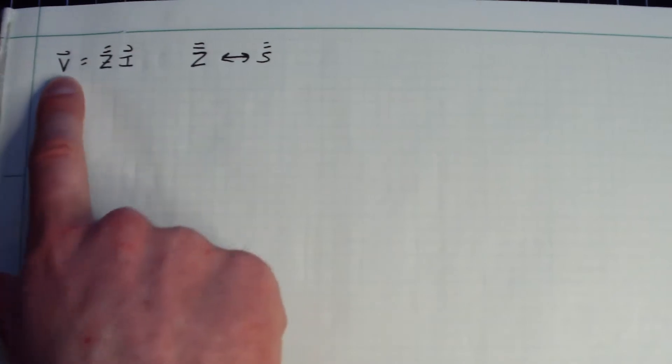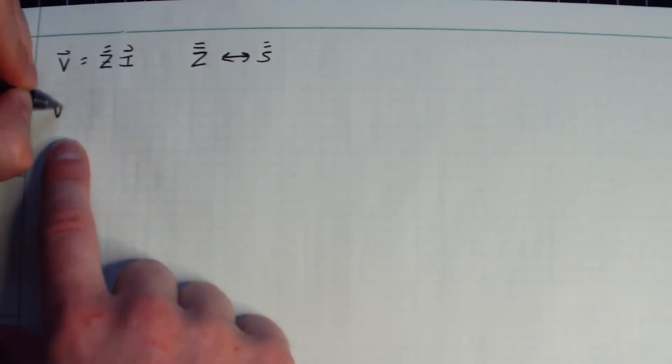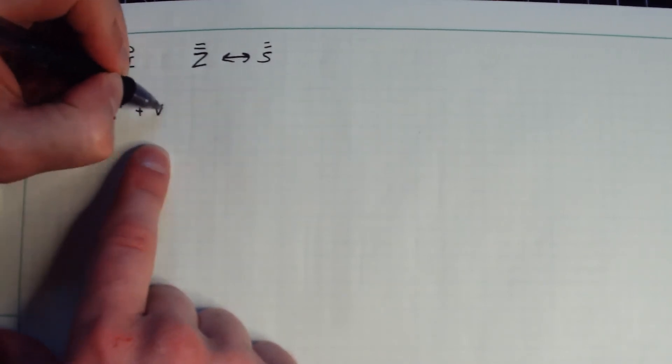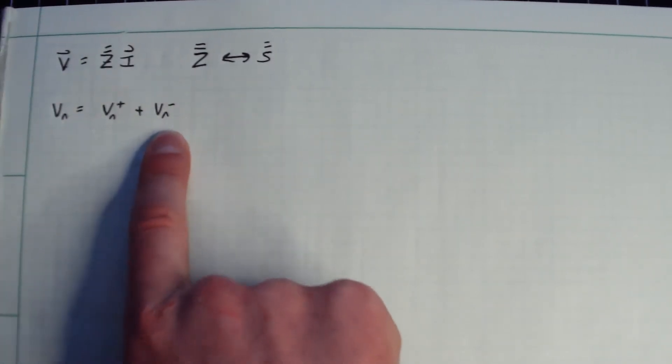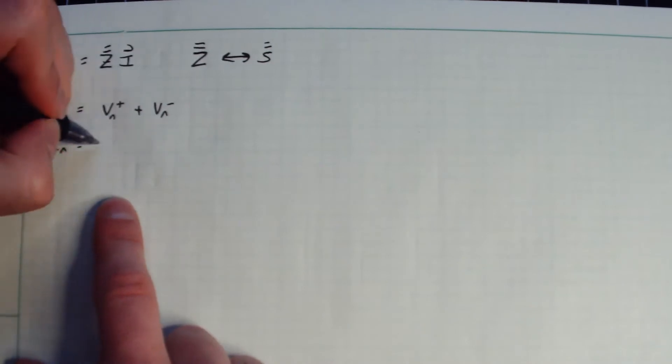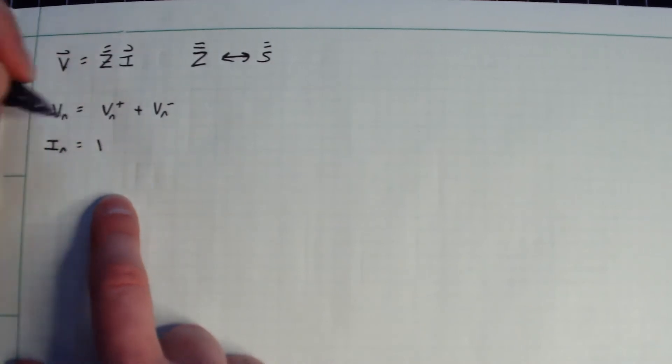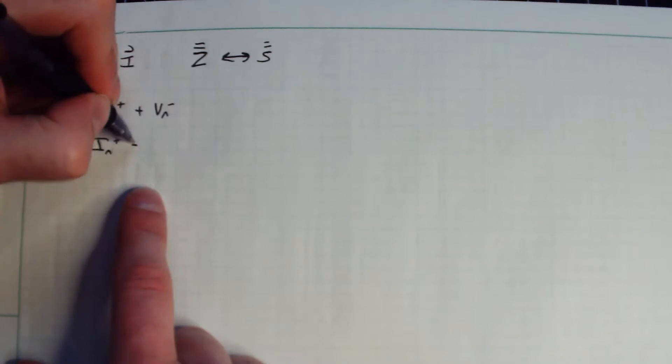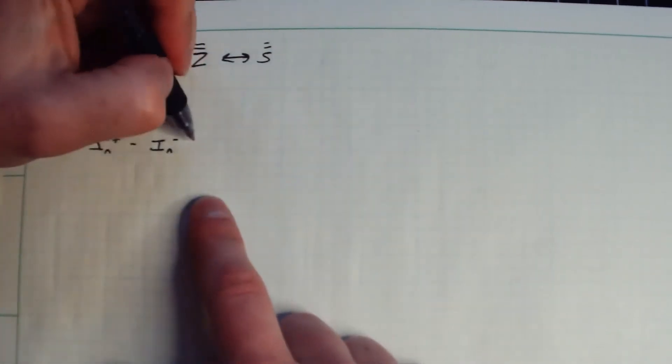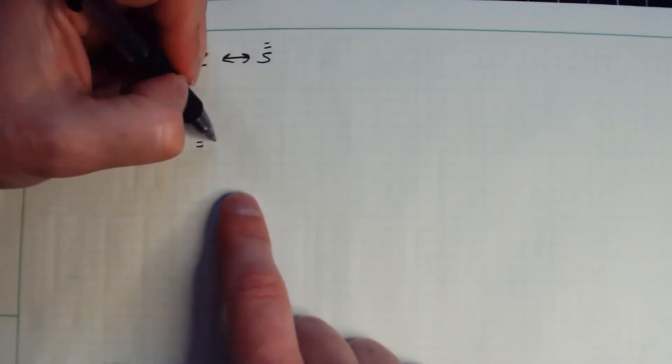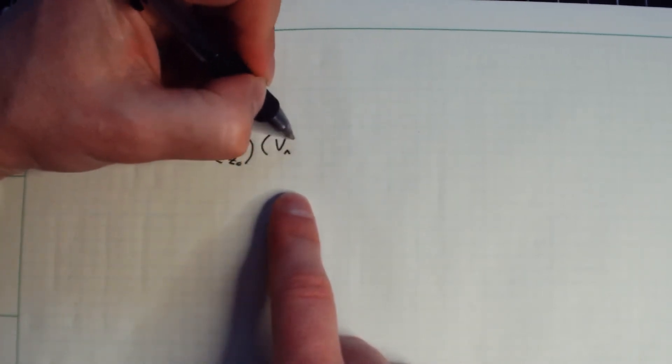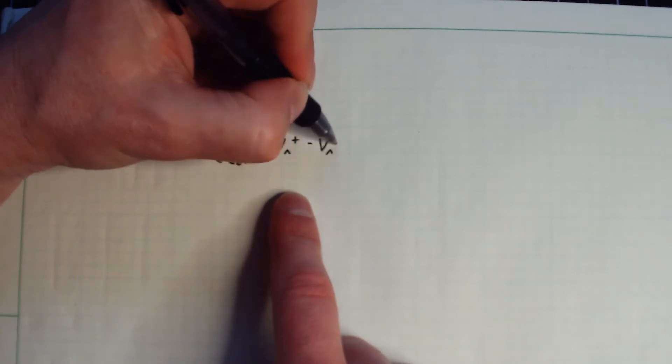So remember that the nth element of this vector, V sub n, is comprised of a forward V plus, plus V sub n minus, a forward and a reverse propagating wave. And likewise, there will be some current corresponding to that particular voltage, which we'll write as I sub n plus minus I sub n minus, which is related to the voltage through the characteristic impedance.